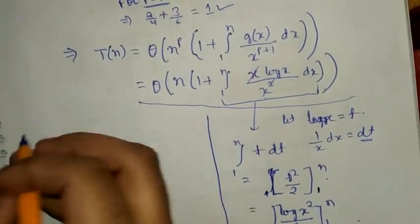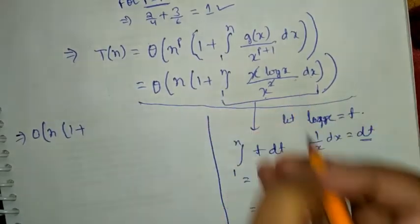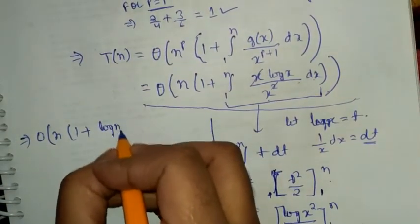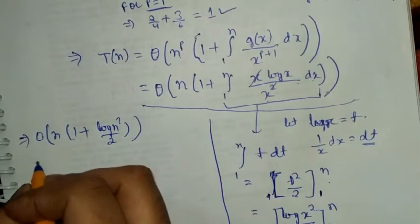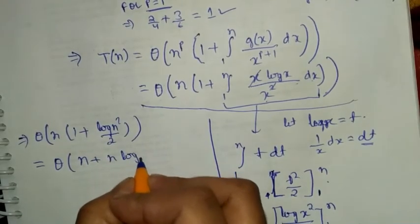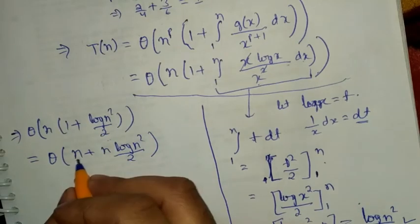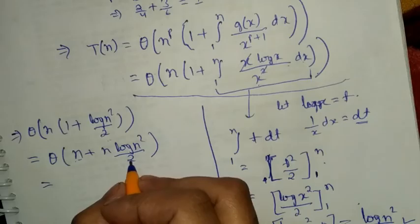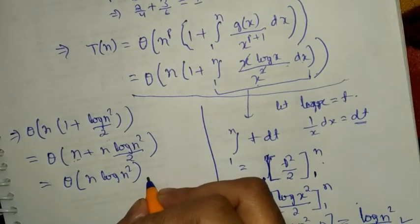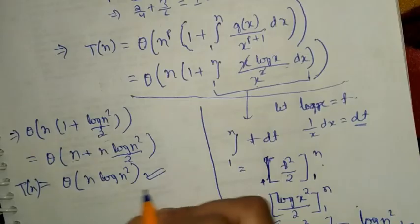Coming back to the full solution: T(n) = Order of n times the quantity 1 plus log n squared over 2, which gives n plus n log n squared over 2. Since the n log n squared term dominates, we drop the lower-order term and constant. The final answer is Theta of n log squared n.